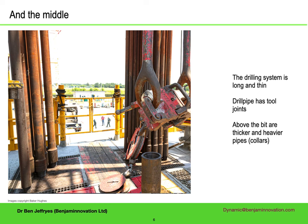At the bottom of the drill pipe are the collars, which are also just steel cylinders, but thicker, wider, and therefore heavier, and without area changes at the joints. This section, with not just collars but other drilling tools, is known as the bottom hole assembly, or BHA.